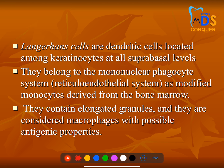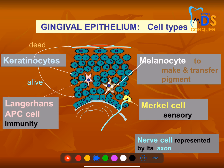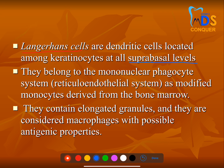Langerhans cells are important and can be asked as bits. They are located among keratinocytes at the suprabasal layers. Based on a cell's function, it is present in a specific layer. Keratinocytes are present toward the epithelial surface; Langerhans cells are present intermittently between epithelial cells; and melanocytes are responsible for melanin production. Use common sense to determine which layer a cell is in.